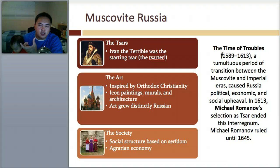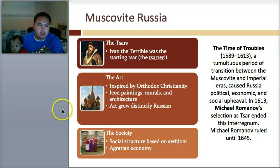In 1613, Michael Romanov's selection as Tsar ended this era — this is called the era of Regnum. Michael Romanov ruled until 1645. There was a midpoint between the Tsars and when Russia became an empire, and you need to know that that period was called the Time of Troubles.